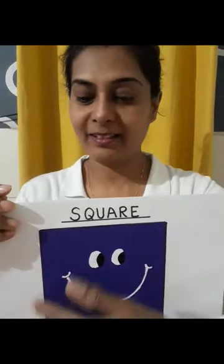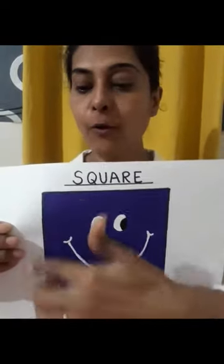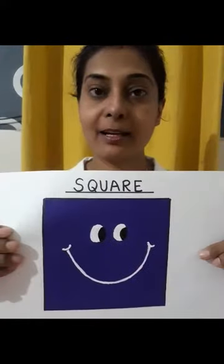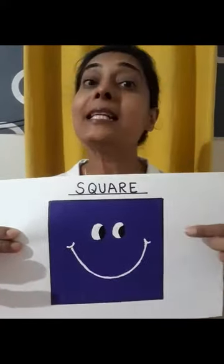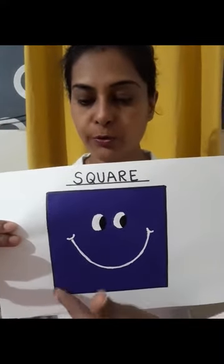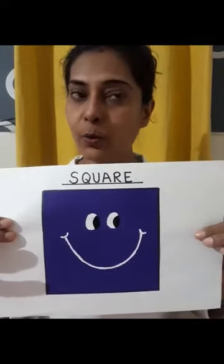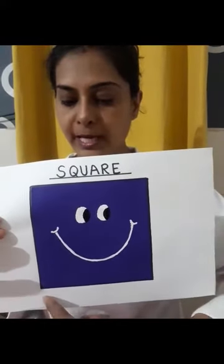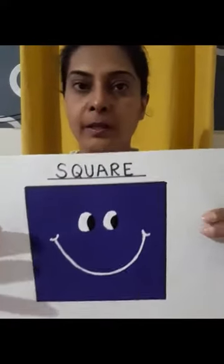So these are the objects which are round. Now let us see the objects which are square. This is a square. A square has got four equal sides — one, two, three and four — and four corners — one, two, three and four.